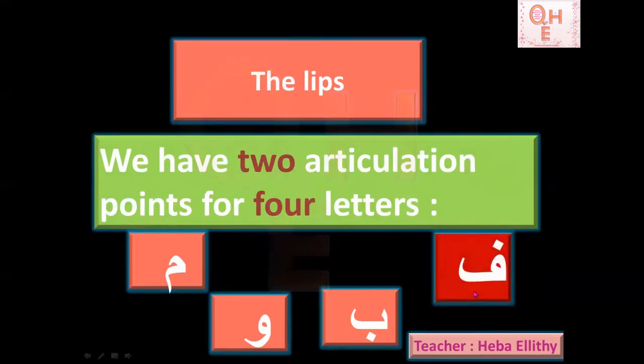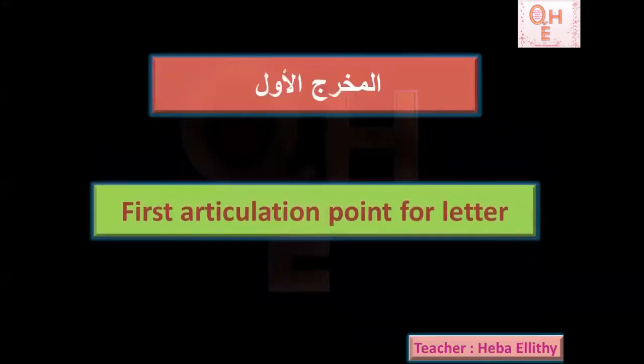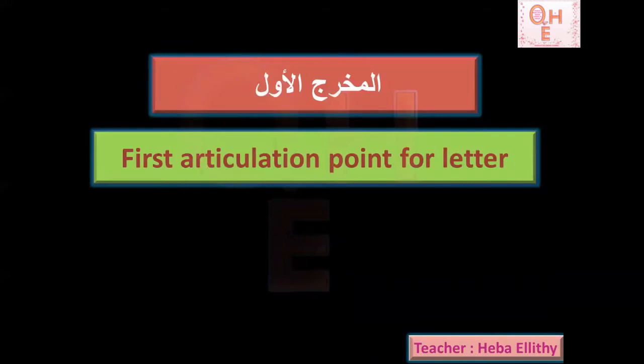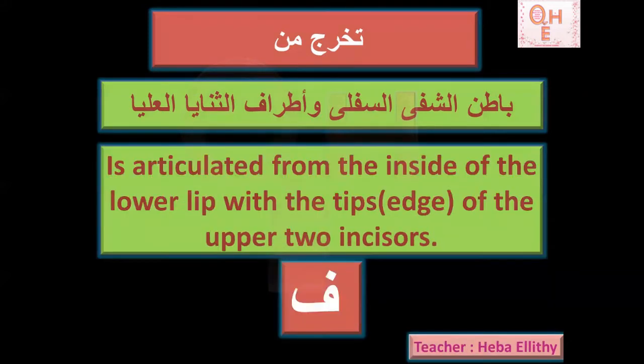Let's go together and see letter Fa — Al-Makhraj Al-Awwal, the first articulation point for letter Fa. It comes out from Al-Bakhraj Al-Shifa Al-Sufla wa Atraf Al-Thanaya Al-Uliya — articulated from the inside of the lower lip with the tips or edge of the upper two incisors.